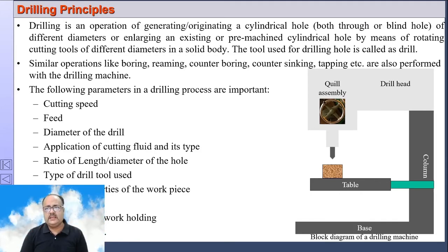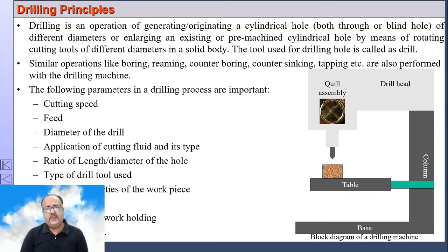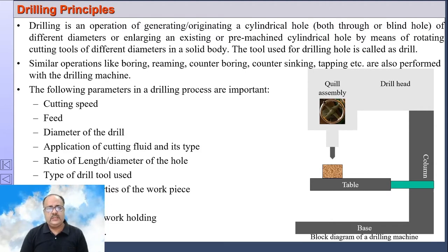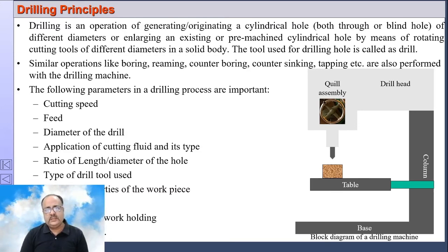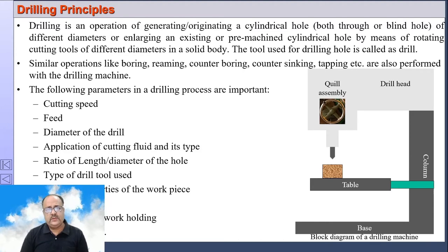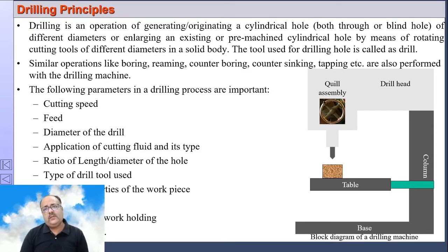What are the factors or parameters that are very important in order to drill a quality hole? Firstly, the cutting speed is very important, the feed, the diameter of the drill, the application of cutting fluids and its type, ratio of length to diameter of the hole, type of the drill tool, and the material properties of the workpiece, the tool material, rigidity of the work-holding devices, and the use of jigs. These are the factors which are very important.